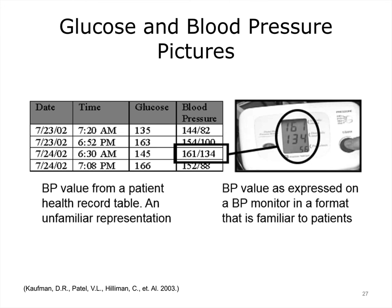Tables can support quick and easy lookup and are compact, efficient representational devices. However, a particular external representation is likely to be effective for some users and not others. For example, reading a table requires a level of numeracy — quantitative literacy — that is beyond certain patients with a basic education. Research has shown that some patients who had no trouble reading their blood pressure on monitors could not understand the same values expressed in tabular form on a computer screen. The same information represented differently can have very significant impacts for different populations, and this has significant design implications.